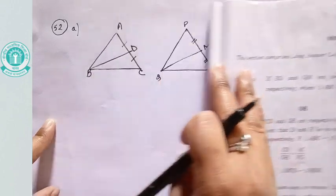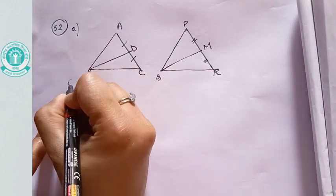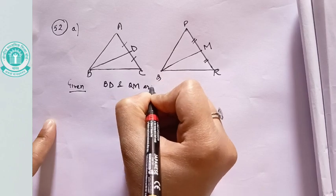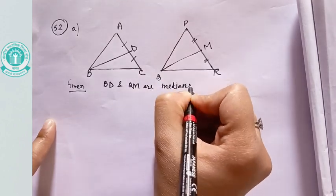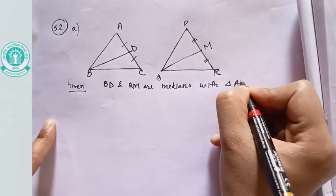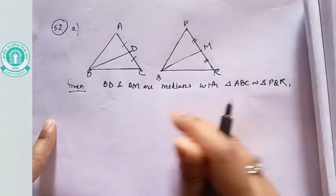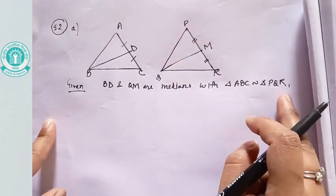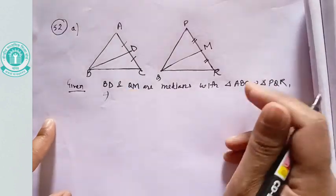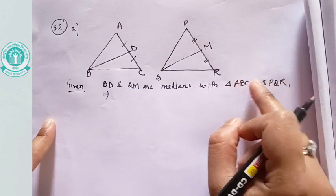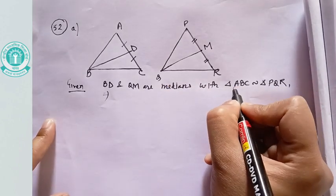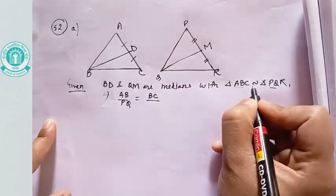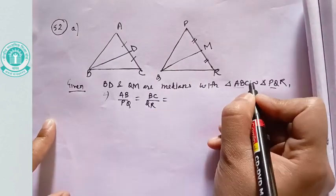We have to show this relation. First, we write Given, To Show, and Proof. Given: BD and QM are medians, and triangle ABC is similar to triangle PQR. This implies that their corresponding sides are in the same ratio: AB/PQ equals BC/QR equals AC/PR.